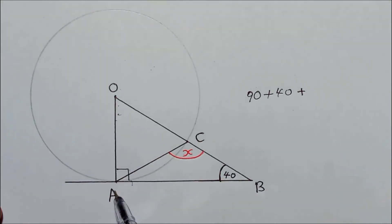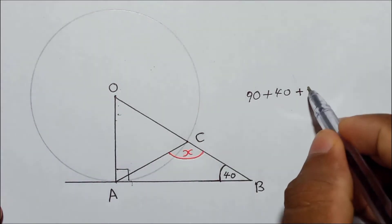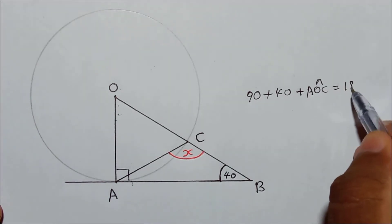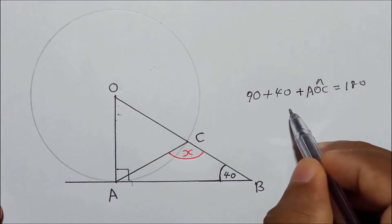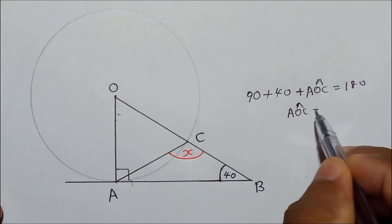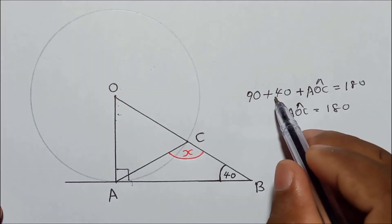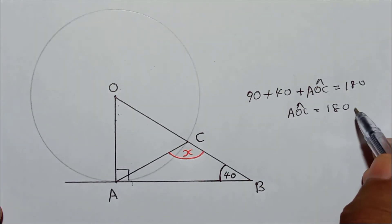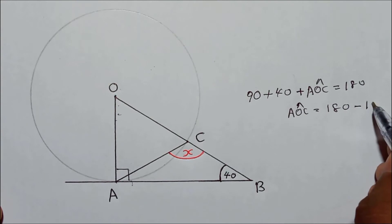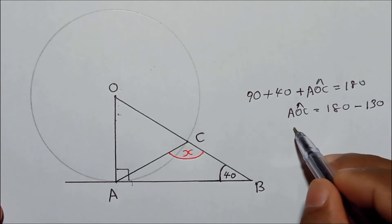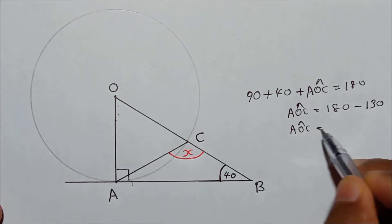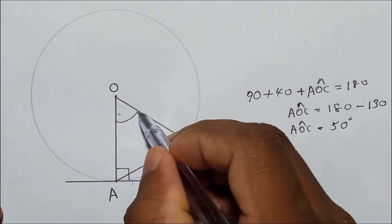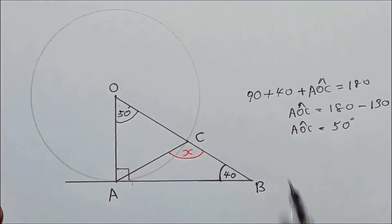So I will get angle AOC. Doing two steps together: 90 plus 40 equals 130. When I bring that to the other side, it will be minus 130. So AOC equals 180 minus 130, which means 50 degrees. That means this angle should be 50 degrees.